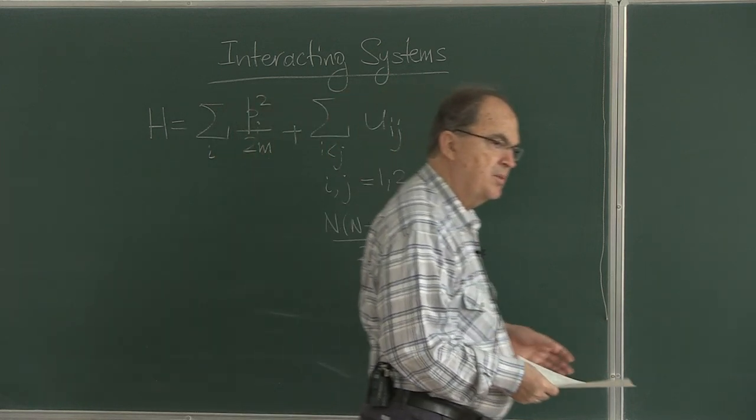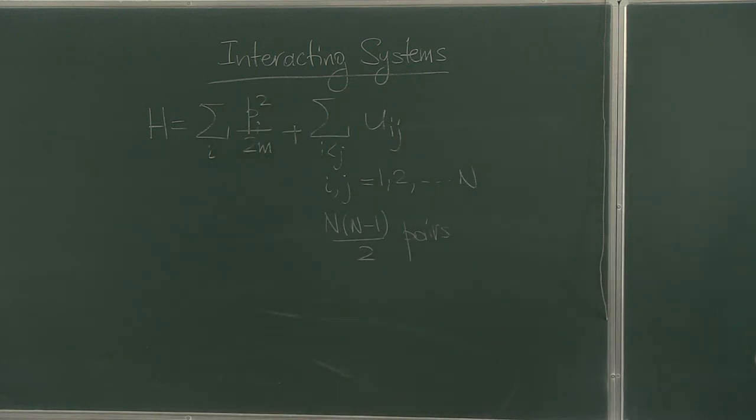That's the number of pairs in a system of n particles. If we have three particles, what's the result? Three times two, six divided by two, three pairs. One-two, one-three, two-three. Exactly.